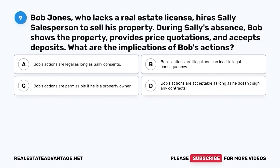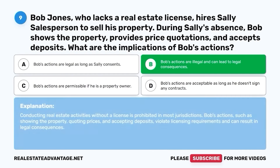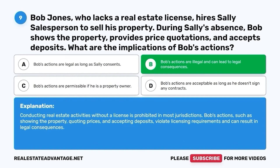Question 9. Bob Jones, who lacks a real estate license, hires Sally's salesperson to sell his property. During Sally's absence, Bob shows the property, provides price quotations, and accepts deposits. What are the implications of Bob's actions? A. Bob's actions are legal as long as Sally consents. B. Bob's actions are illegal and can lead to legal consequences. C. Bob's actions are permissible if he is a property owner. D. Bob's actions are acceptable as long as he doesn't sign any contracts. The correct answer is B. Bob's actions are illegal and can lead to legal consequences. Conducting real estate activities without a license is prohibited in most jurisdictions. Bob's actions, such as showing the property, quoting prices, and accepting deposits, violate licensing requirements and can result in legal consequences.